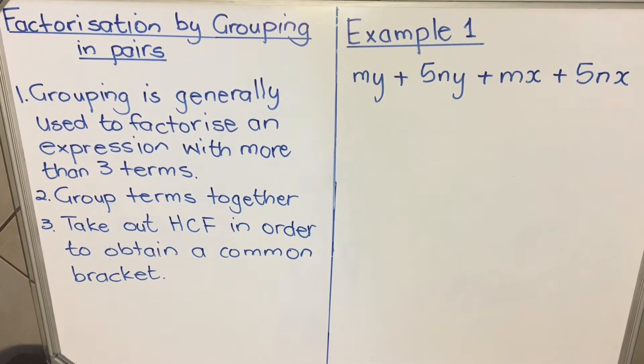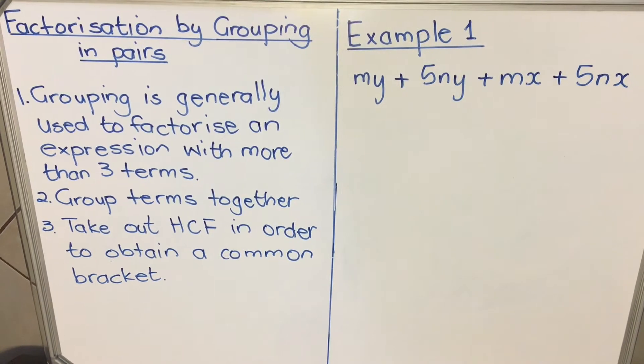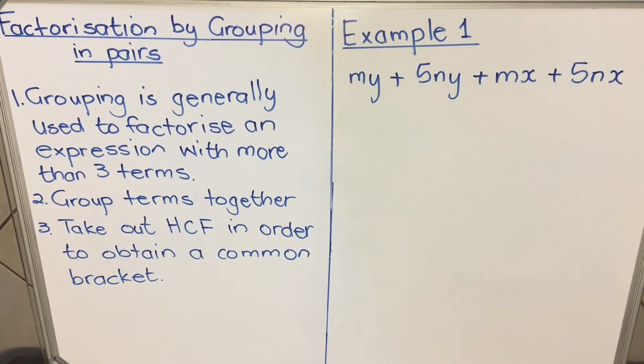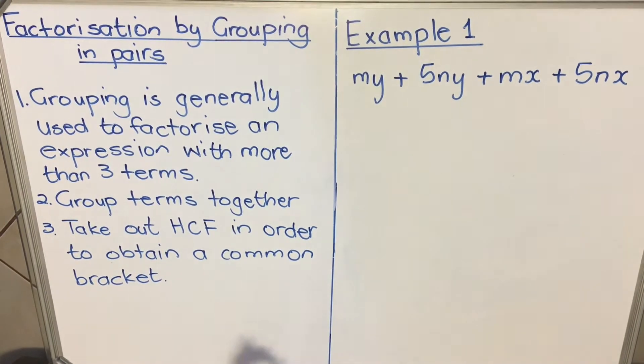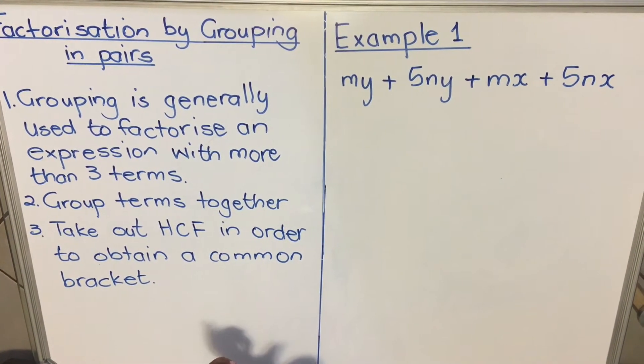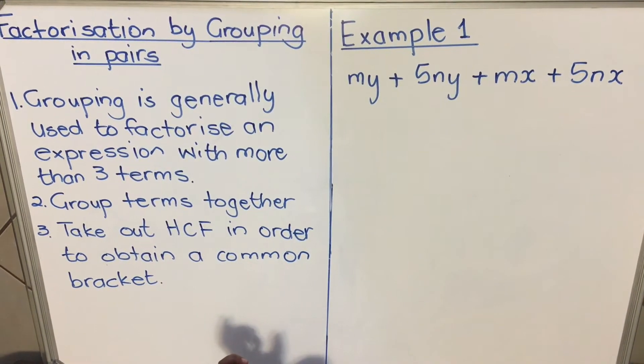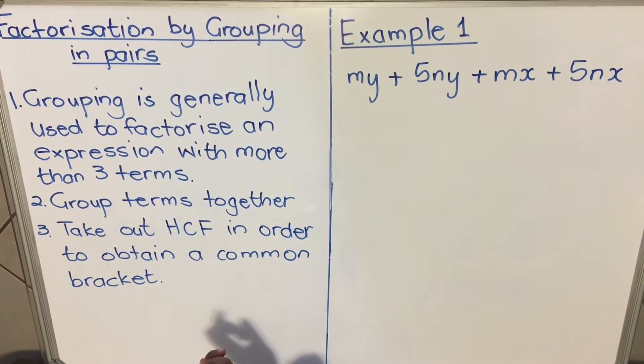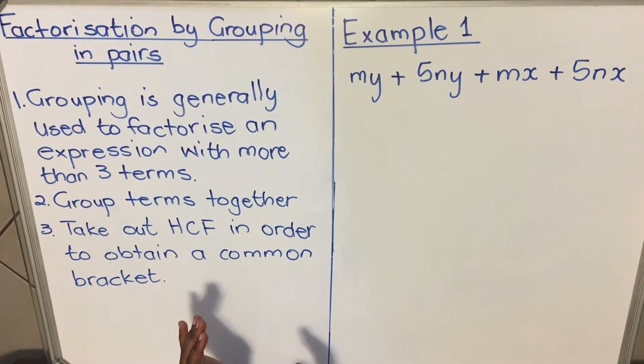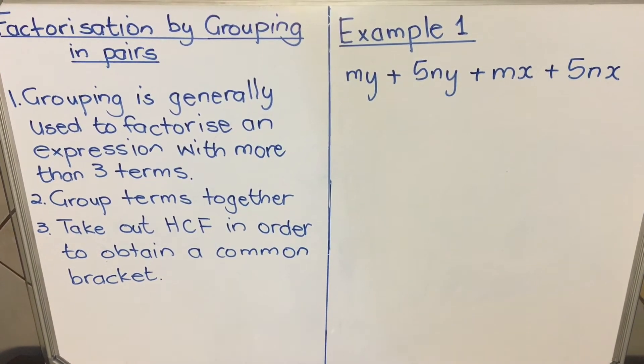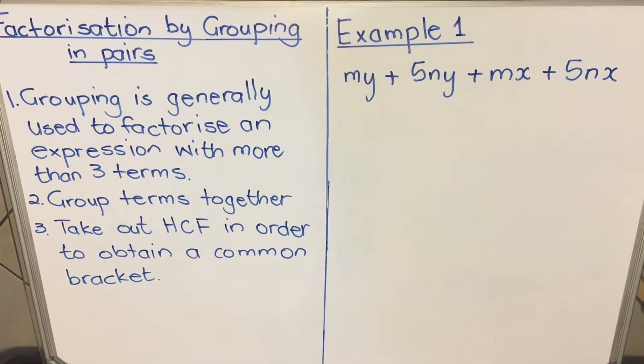Hello everyone, this is a video on factorizing by grouping. The first thing you see in a question paper that indicates factorizing by grouping is generally more than three terms. Remember, when it's three terms, that's a trinomial. So when it's more than three terms, it's probably going to be grouping. What do you do? You group terms together, and then after that you take the highest common factor and try to obtain a common bracket.